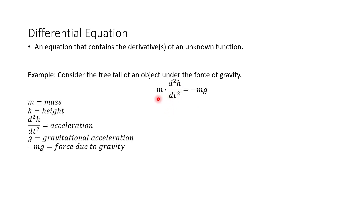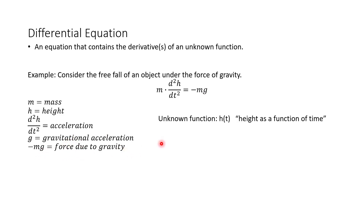Let's talk a little about this example. Here m represents the mass of our object, and h represents the height of the object above the ground. The second derivative — since you think of height as position — is the acceleration of the object. g is gravitational acceleration, so negative m times g is the force due to gravity. Our unknown function is h of t, the height as a function of time.